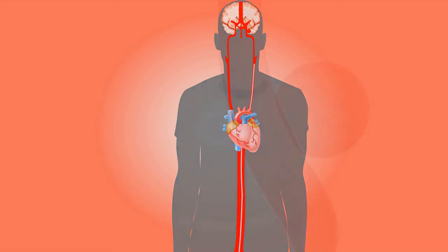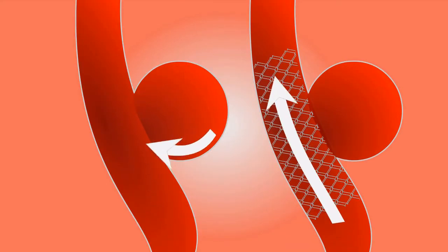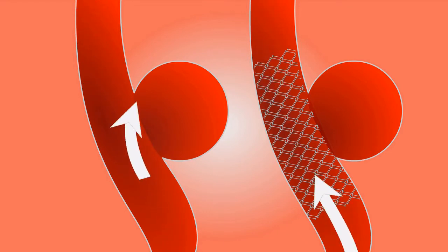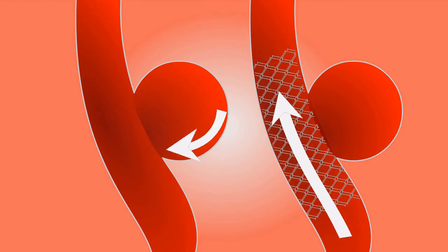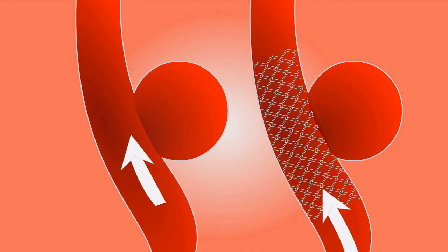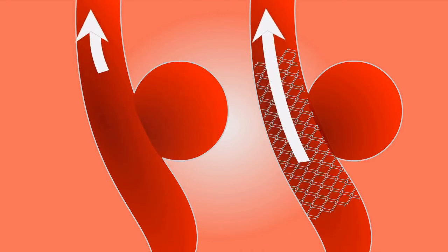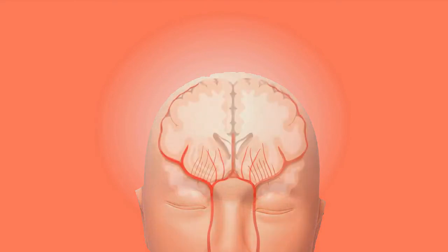Now let's see the hemorrhagic stroke. It starts when there is an aneurysm. When there is an aneurysm, this is a balloon-like part on the artery. Blood will just be circulating into the aneurysm, into the balloon. At the end of the day, if it is not treated, what happens is...